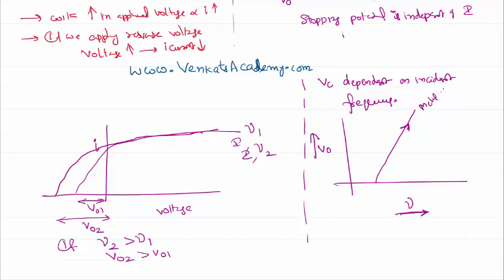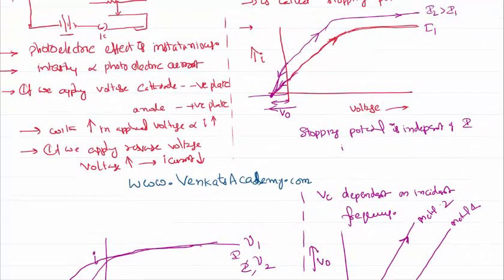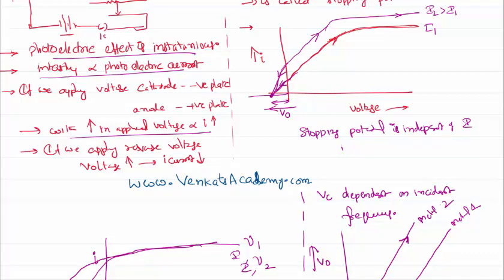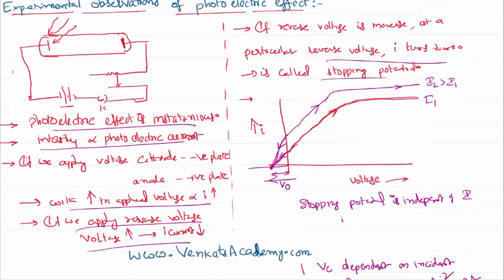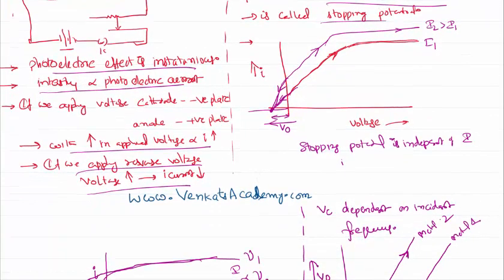To summarize the observations: first, the photoelectric effect is an instantaneous process. Second, it does not occur at all frequencies but starts from a particular threshold frequency. Third, the intensity of incident light is directly proportional to the photoelectric current. Fourth, increasing forward voltage increases current; increasing reverse voltage decreases it. At a particular reverse voltage — the stopping potential — current becomes zero. The stopping potential is independent of intensity but directly proportional to the incident frequency. These observations will be explained in the next video lesson.